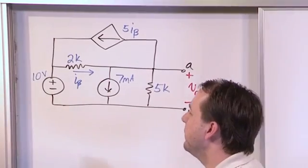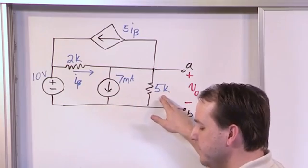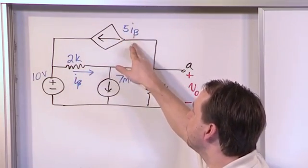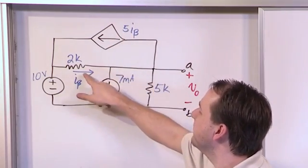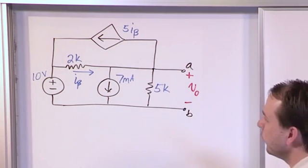So in this problem we have a 10 volt source, we have a 7 milliamp source, we have some large resistors, 5 kilo ohms and 2 kilo ohms, and we have a current controlled current source. The value of this current source is equal to 5 times the current flowing in that direction across that resistor, or through that resistor.